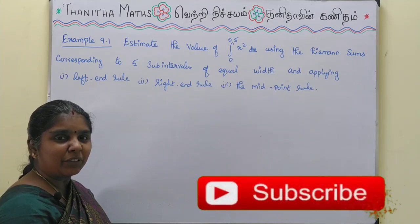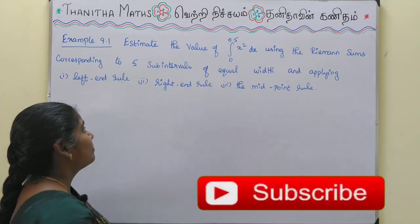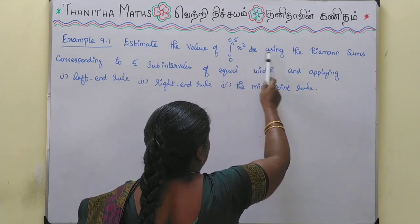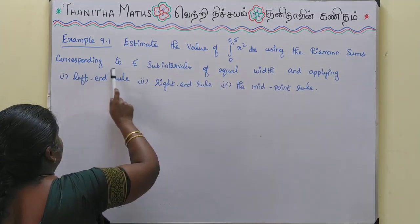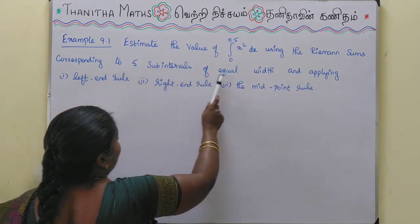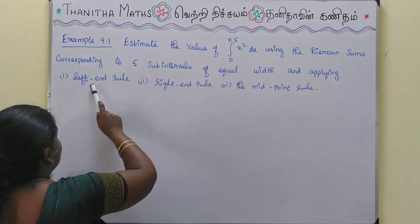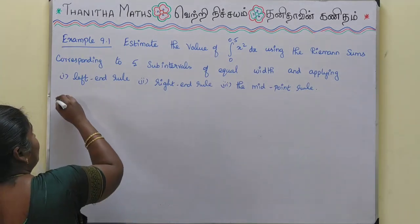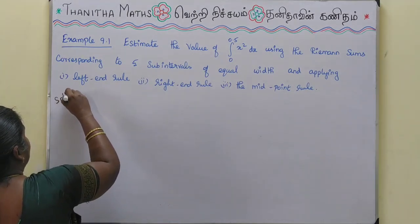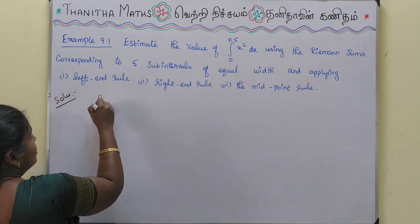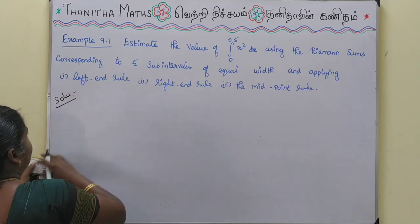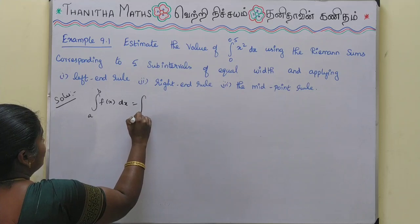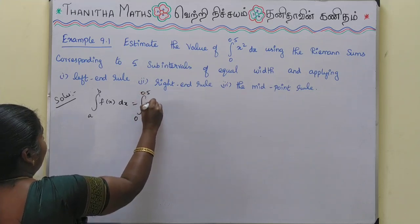In this video, example 9.1: estimate the value of the integral from 0 to 0.5 of x² dx using Riemann's sum corresponding to 5 sub-intervals of equal width, and applying the left-end rule, right-end rule, and midpoint rule.